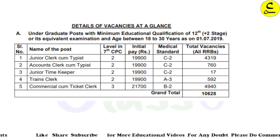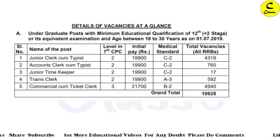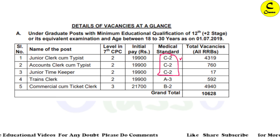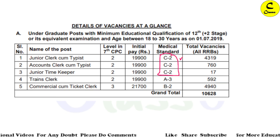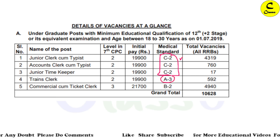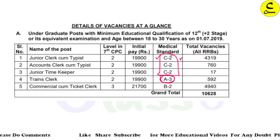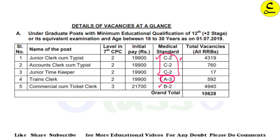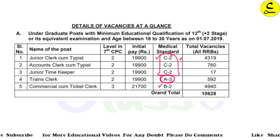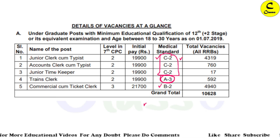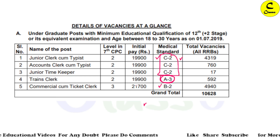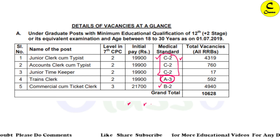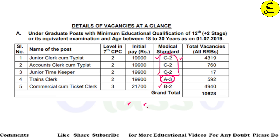Regarding medical standards for Level 2: typing posts have C2 medical standard, and Train Clerk has A3 medical standard. There is already a separate video on this channel explaining what C2 medical standard means. Medical is a very important factor in the railway exam — if there is any medical issue, you will be removed from the entire process.